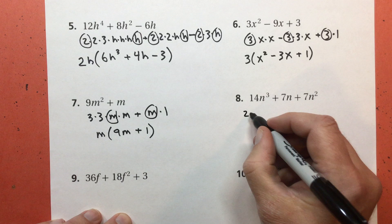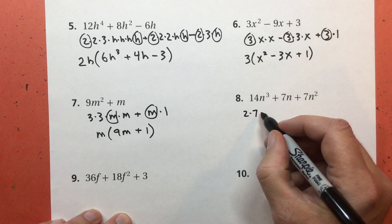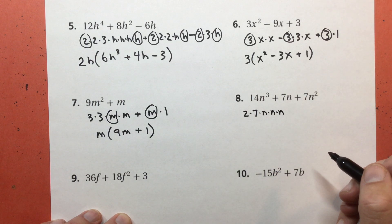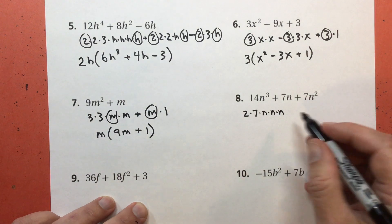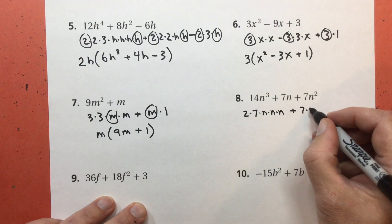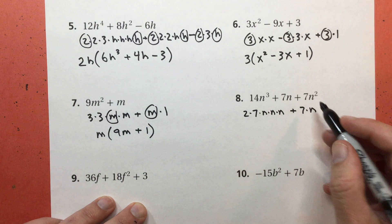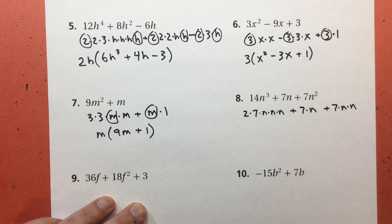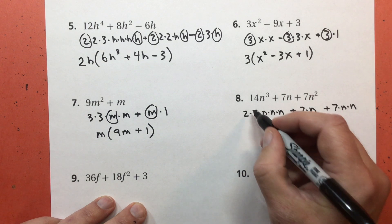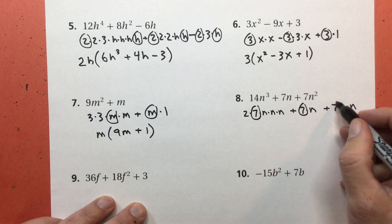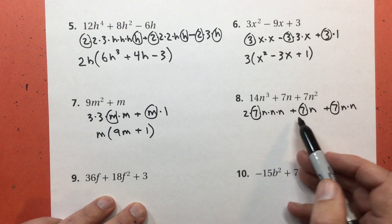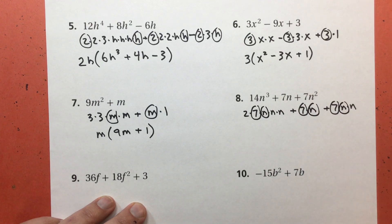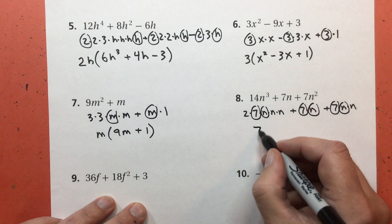14 is 2 times 7. N to the third power. N times N times N. I know I'm from Indiana, so my Ns sound like Ns. 7N is 7 times N. And 7N squared is 7 times N times N. All right. Here's a 7. There's a 7. There's a 7. They all have a 7. That's the only common constant that they have. Here's a 2, but that's it. They all have an N. Here's an N. Here's an N. Here's an N.